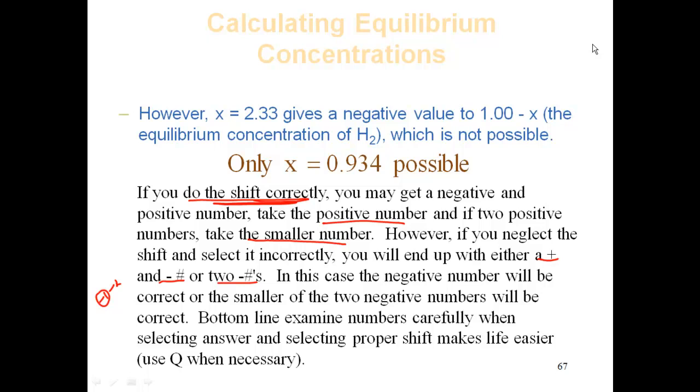It just gets a little bit more complex when you're looking at numbers that you may get a little more hesitant and feel like things aren't looking right. And you start messing around with your numbers and end up doing things, making things incorrect. So bottom line is you want to basically select the proper shift. That makes life easier. That means if you have to do Q, then do Q to decide which way it is if you have concentrations or pressures of all reactants in products.